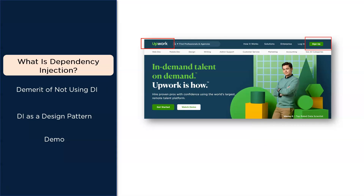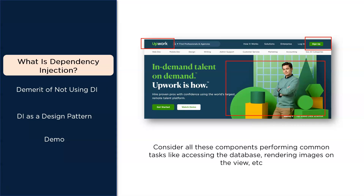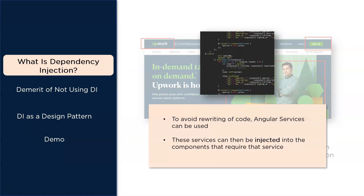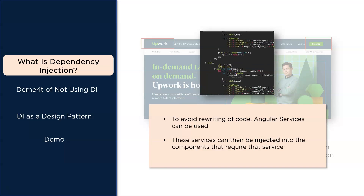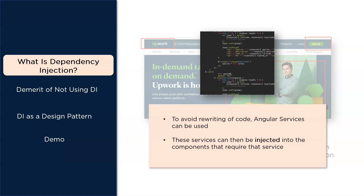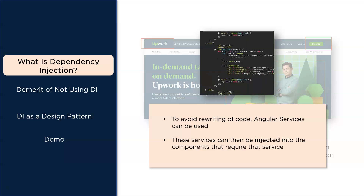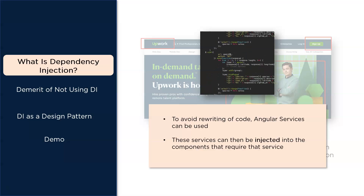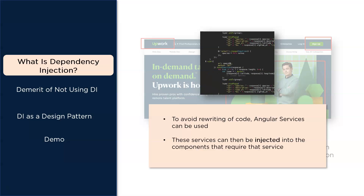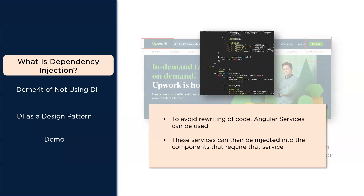Angular uses the concept of components — the entire UI of the application is divided into several components. Now what if all of these components perform similar tasks, be it accessing the database, rendering images, etc.? Instead of writing the same piece of code for every component, you could write the code once and then inject the same code into every component. This is supported by dependency injection.